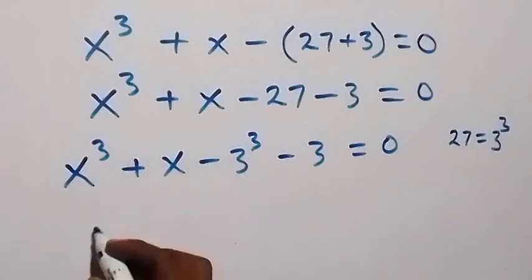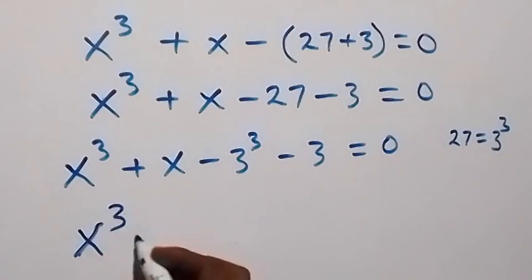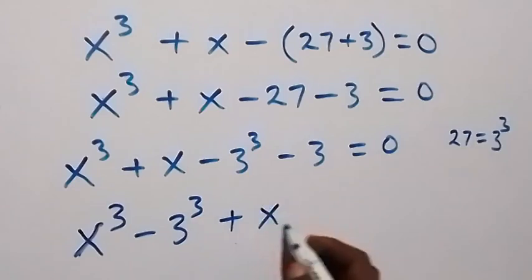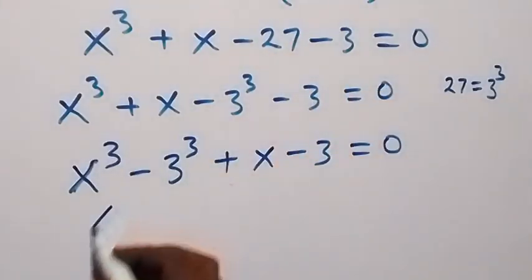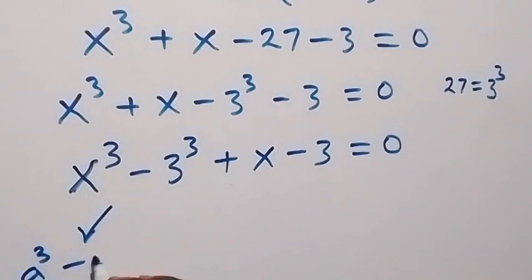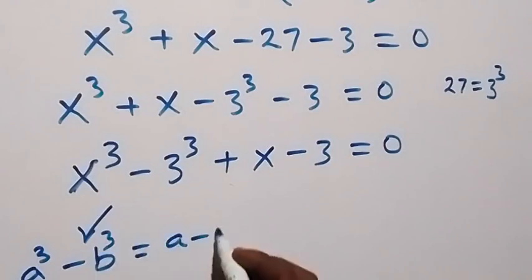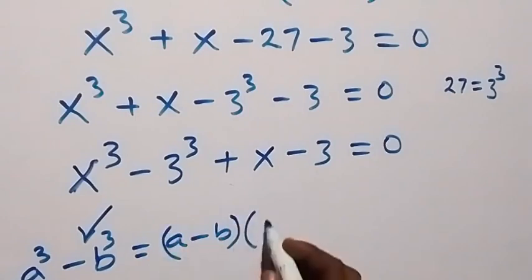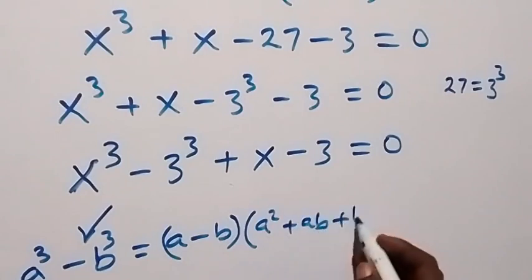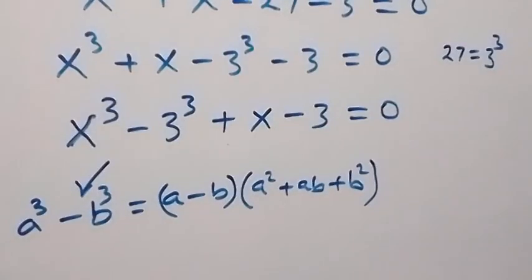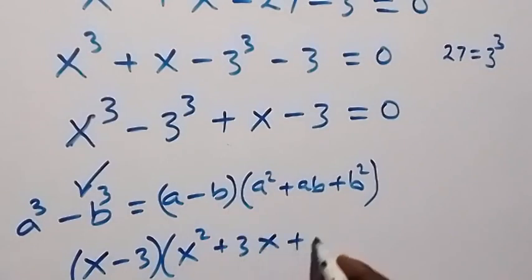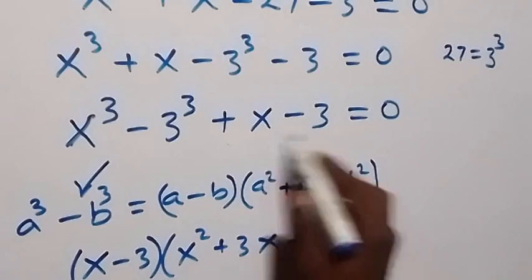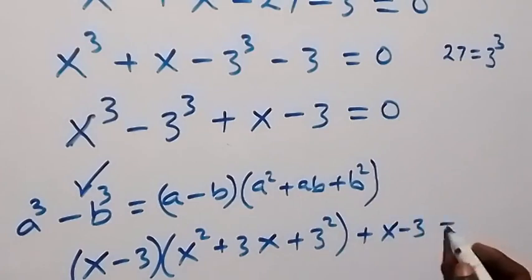What we have here follows the difference of two cubes. We have a cube minus b cube, which equals to a minus b, into bracket a squared plus ab plus b squared. When we apply that here, this means we have x minus 3, into bracket x squared plus 3x plus 3 squared.